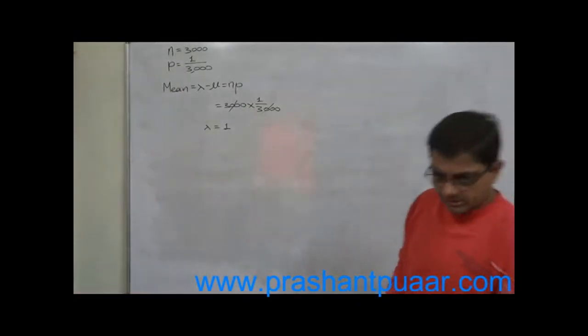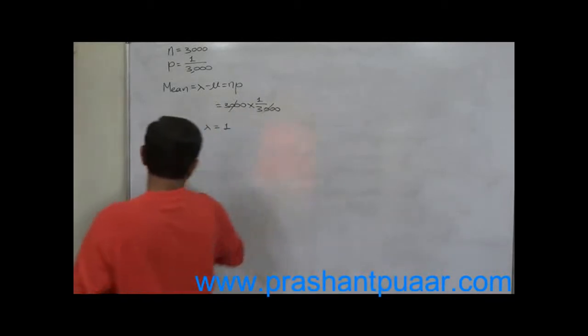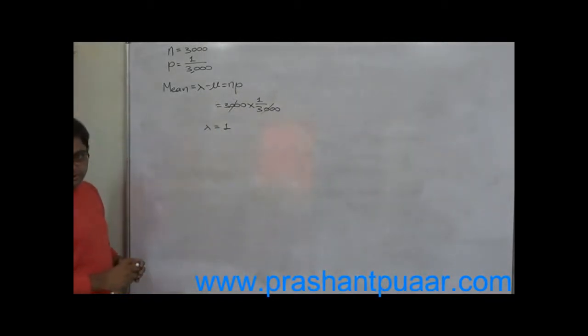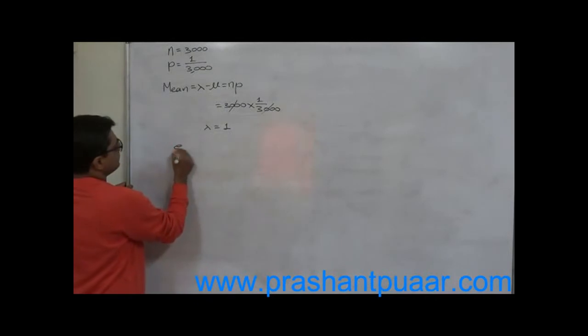So this problem can be solved through Poisson distribution. Now mean is 1, that means e raise to minus mean will be e raise to minus 1.